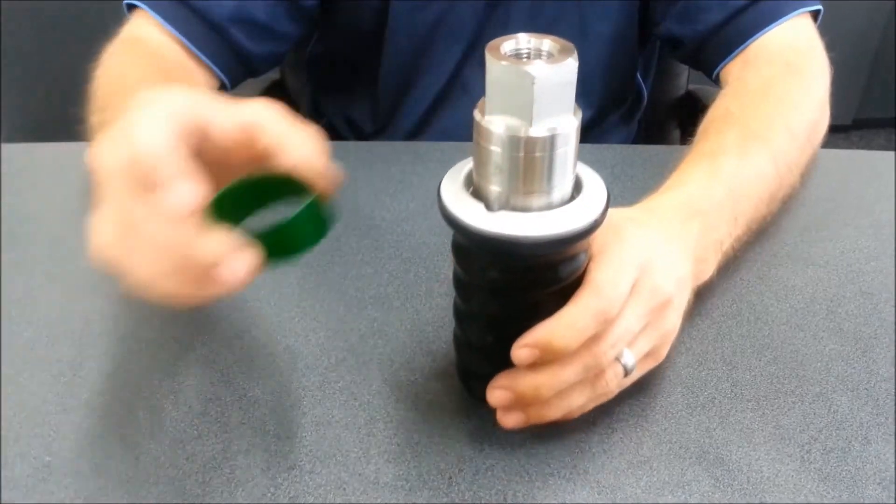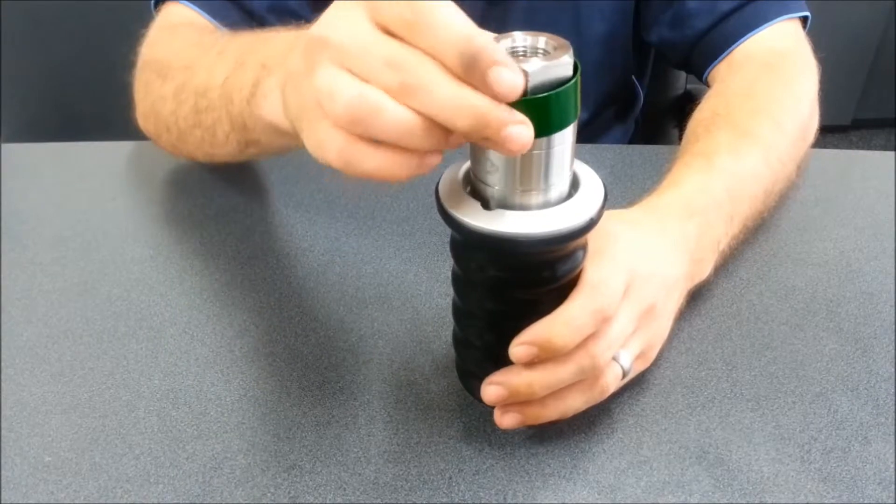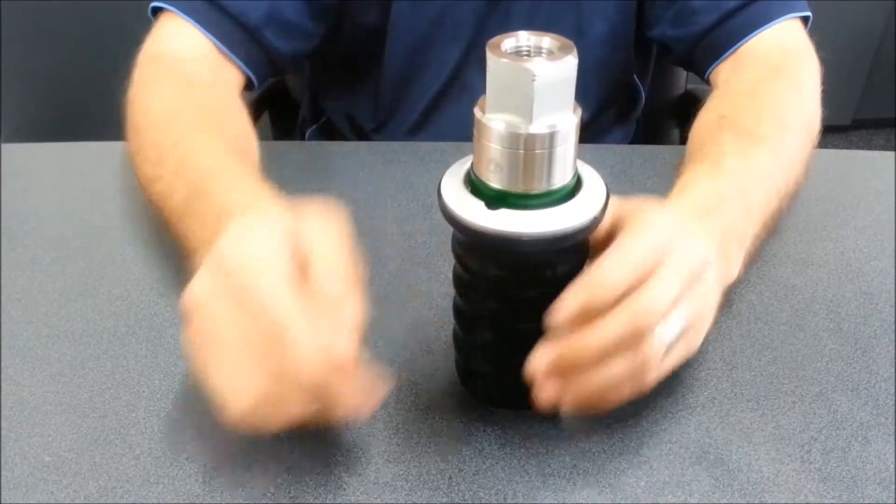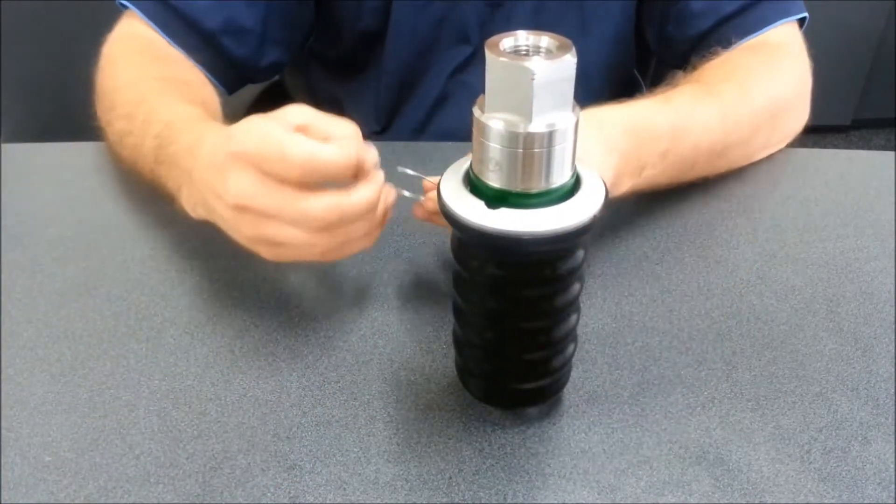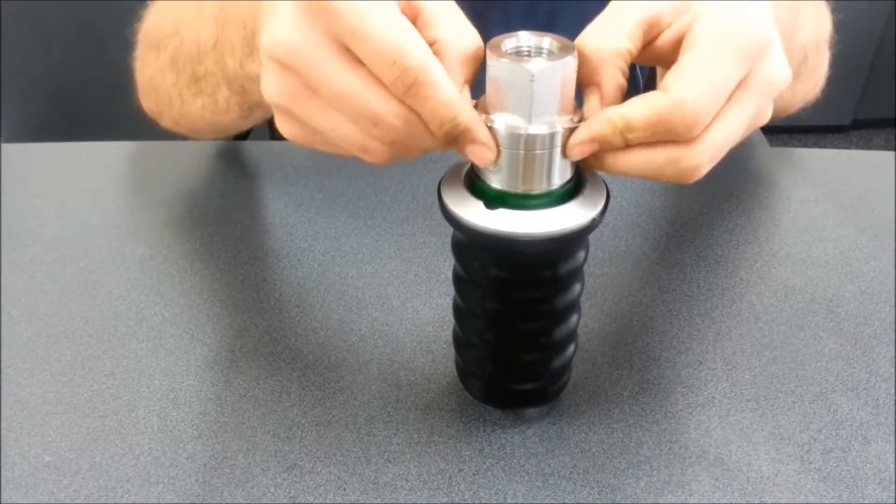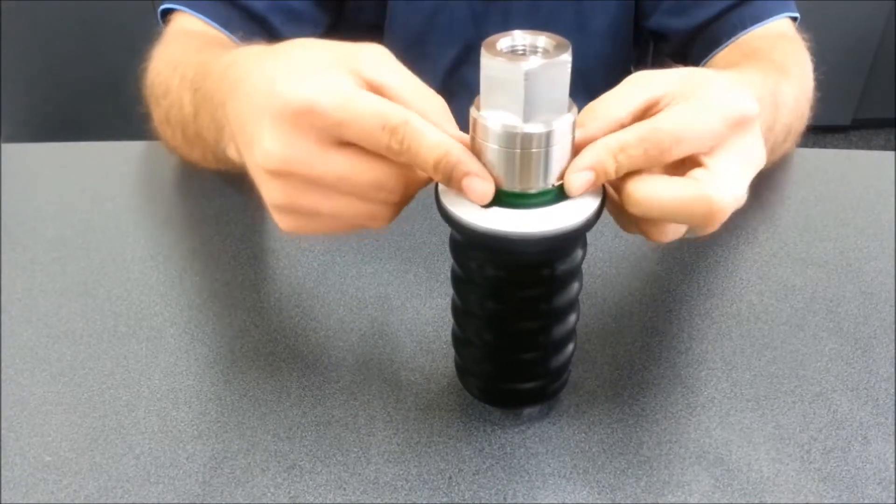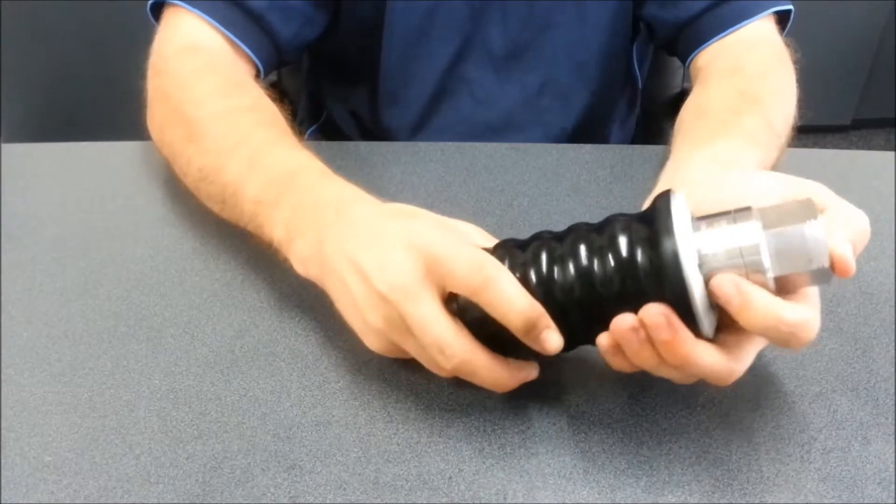Slide on the green sleeve and install the green sleeve retainer clip. Remove the assembly tool and your service is complete.